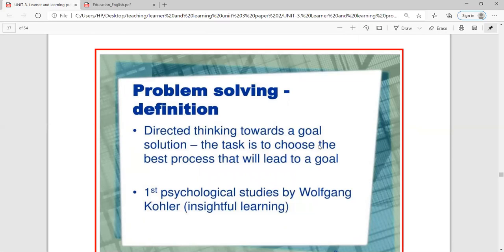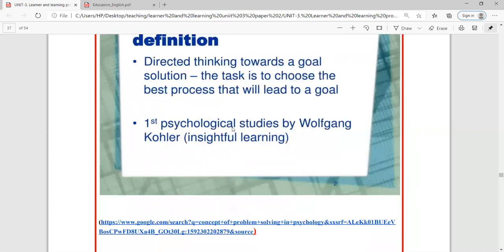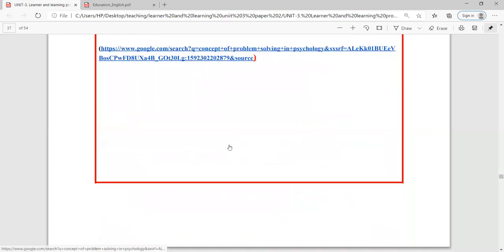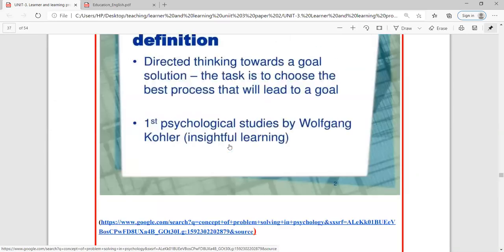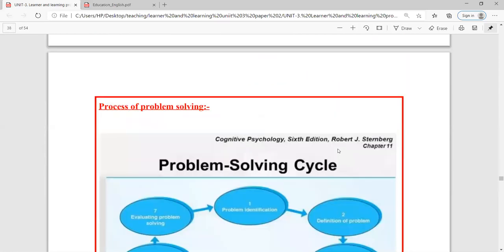Problem solving is the work of reducing the distance between what is expected and what is occurring. We try to reduce the gap between them. Problem solving definition, directed thinking towards a goal solution, the task is to choose the best process that will lead to goal. Goal oriented problem solving. We choose to achieve that goal. What is the best strategy? First Psychological Study by Wolfgang Kohler, Insightful Learning. You have heard about this experiment on Sultan the chimpanzee. There was also a problem solving. If you ask that the first psychologist who studied the problem solving strategy, it was Wolfgang Kohler. His name was Insightful Learning.